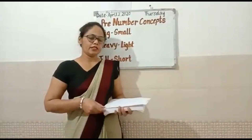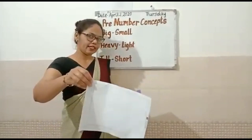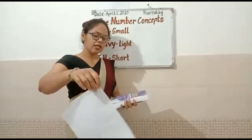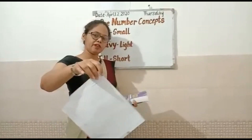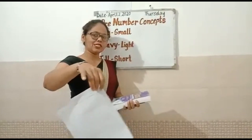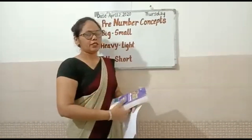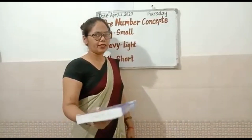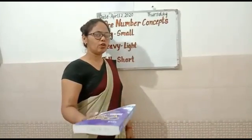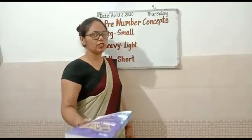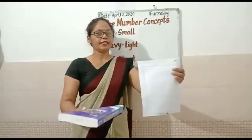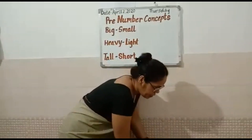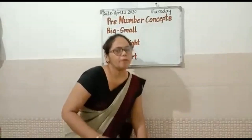Our next example is heavy and light. This paper is light — light means halka. I can hold this paper with my fingers only, this is light. But this book is heavy — heavy means bhaari. I cannot hold this book with my fingers only, this is heavy.